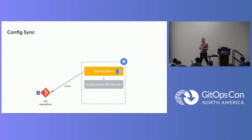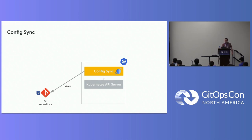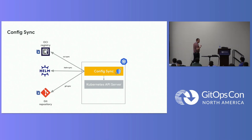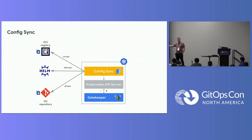What we are illustrating today are two new adapters and controllers where you can sync directly from a Helm chart exposed in a Helm registry, and the same for an OCI registry where you can pull any OCI artifact including Kustomize overlays — ConfigSync does the last-mile iteration for you. Complementary tools could be Gatekeeper or Kyverno.